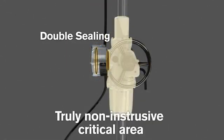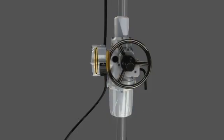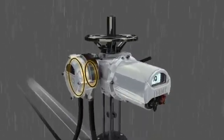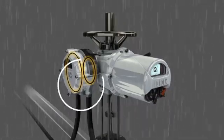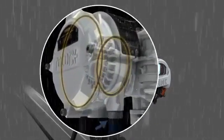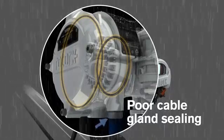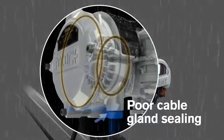The second o-ring seal around the terminal block provides internal protection from potential moisture ingress through the conduit entries. It prevents exposing the actuator's internal electronics to the environment, even when the terminal cover is removed.